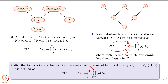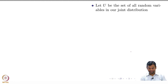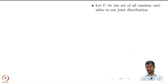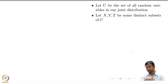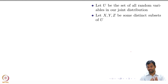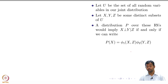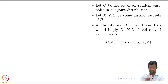That's the summary of what we did before the summer vacation. Now we continue with the question: what are the independencies encoded by a Markov network? Let U be the set of all random variables x₁ to xₙ in our joint distribution, and let X, Y, Z be some distinct subsets of U. A distribution P over these random variables implies that X is independent of Y given Z if and only if we can write the joint distribution as a product of certain factors.